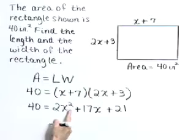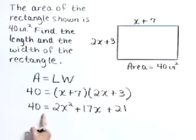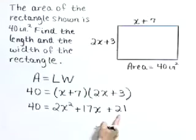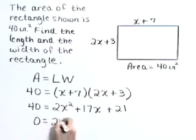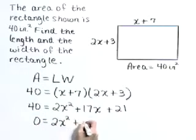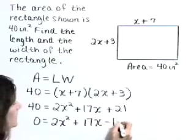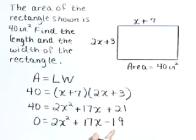We see we have a quadratic equation here. Let's put it in standard form. So go ahead and subtract that 40 from both sides, giving 0 on the left and 2x² + 17x - 19 on the right.